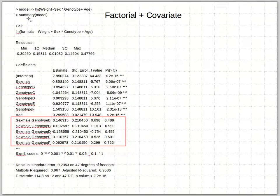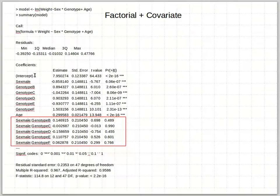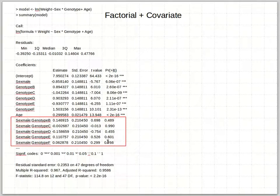The model is LM of weight as a function of sex times genotype plus age. The summary spits out lots of results — the intercept represents the simplest case, which is sex female and genotype A, and we see that coefficient is significantly different from zero. The other terms are compared to that coefficient in t-tests. Notice the ones marked in red are not significant — the sex-genotype interactions are all non-significant. It's a pretty strong model with a high adjusted R-squared.